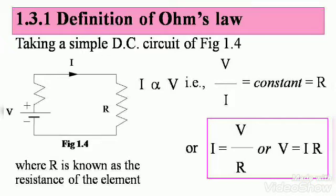Let's take a simple DC circuit shown in Figure 1.4. Note down the figure — voltage is V, the current is I, and we have an element. I is proportional to V, that is, V divided by I is a constant, and that constant we take as R, where R is known as the resistance of the element. So I is equal to V over R, or V is equal to IR. This is how we show Ohm's law in equation form — V equals IR is the general way of expressing it.